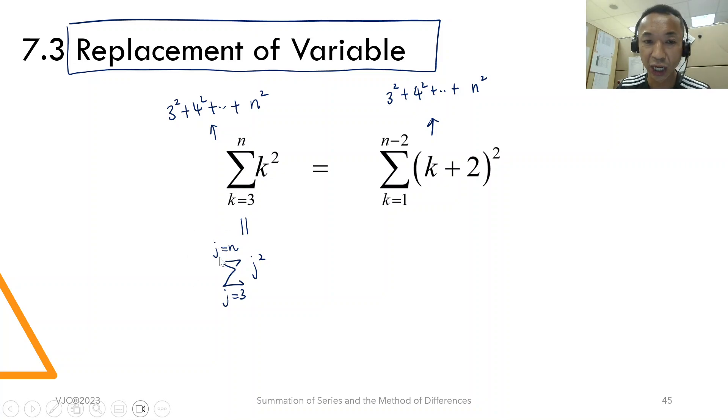Notice I deliberately write j equals to n, because this j equals to n is indeed the last term when I sub. My j takes on the value n. You get 3 square, 4 square, all the way to j equals to n, that means n square.